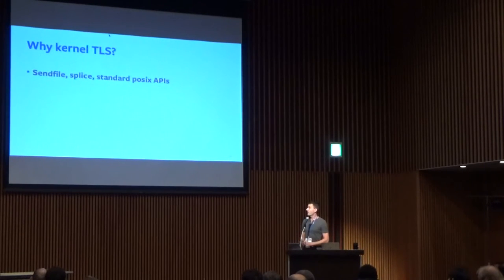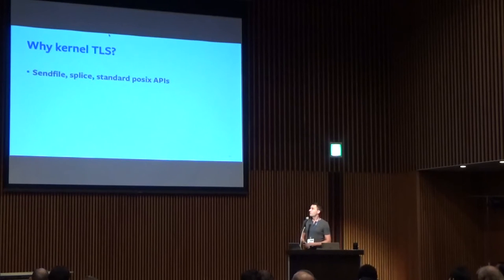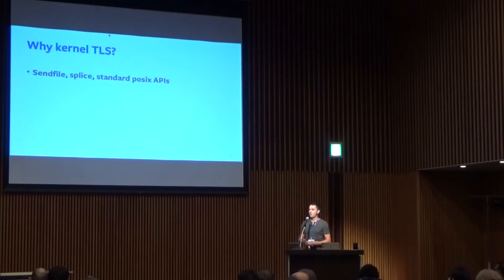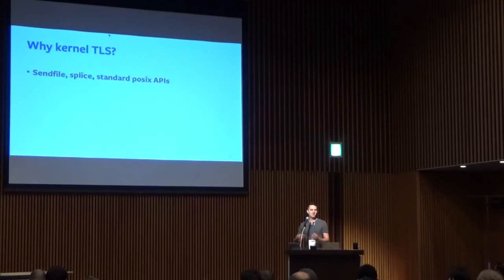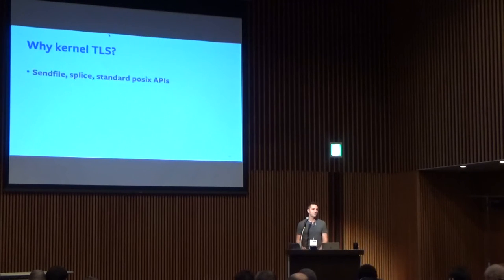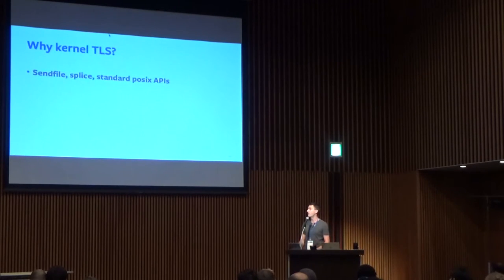So why are we trying to put TLS in the kernel? There's a bunch of different reasons — SendFile, Splice, standard POSIX APIs. Right now, if you want to use TLS encryption, you have to figure out different libraries — OpenSSL, GNU TLS, whatever. They all have their own sort of interface. While our interface to kernel sockets has improved with time — we have SendMessage, SendFile, Splice — most user-based TLS libraries haven't gained these same things, or very slowly. We've had to do a bunch of work retrofitting OpenSSL with stuff that, if we had the standard interface, it would have just worked out of the box for us.